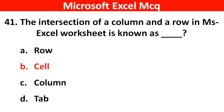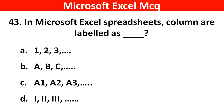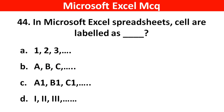Next question: In Microsoft Excel spreadsheets, rows are labeled as dash dash. Right answer is Option A. Next question: In Microsoft Excel spreadsheets, columns are labeled as dash dash. Right answer is Option B. Next question: In Microsoft Excel, the active cell is identified by dash dash. Right answer is Option C.